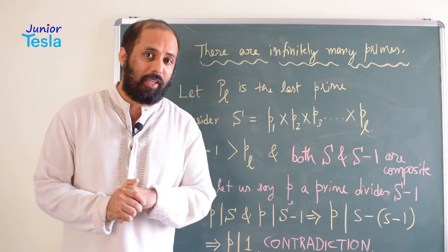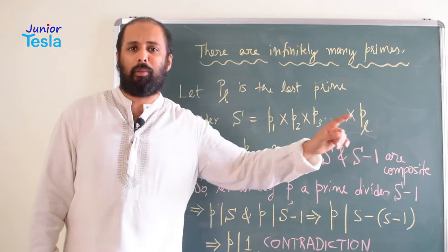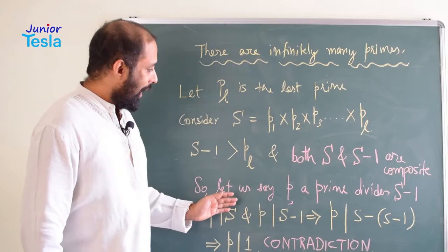Now, that prime number P also divides S because S is nothing but the product of all the prime numbers. So definitely P will be dividing S. So P divides S and P divides S minus 1.